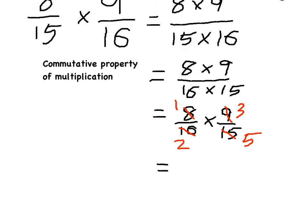Now we can see that our numerator is 1 times 3, or 3, and our denominator is going to be 2 times 5, which is equal to 10. And that kind of shows you the steps of why cross-simplification works.